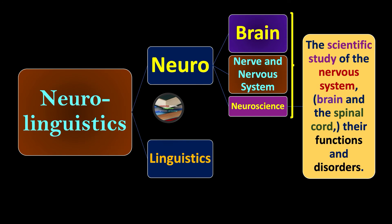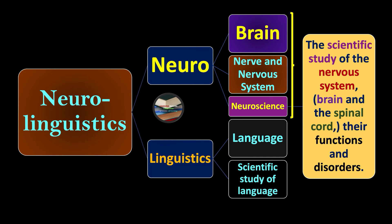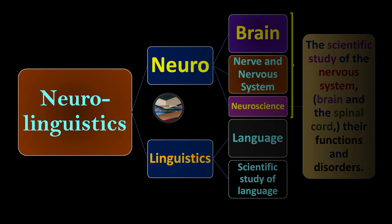Now we have the word linguistics. As you know, it is related to language, and the scientific study of language is known as linguistics. That is how neuro linguistics is combined with the help of these two different disciplines: brain and language.